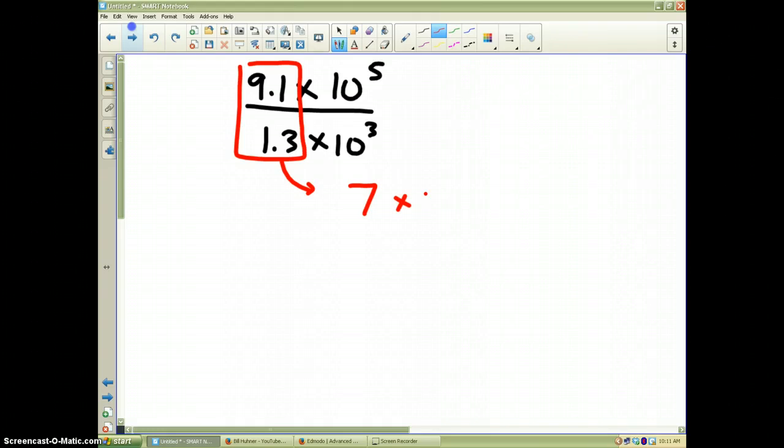And then the times 10 part—obviously since we're dividing, we all know from the last example video, you subtract those powers, so 5 minus 3 is 2. And there you go, there is our number in scientific notation.